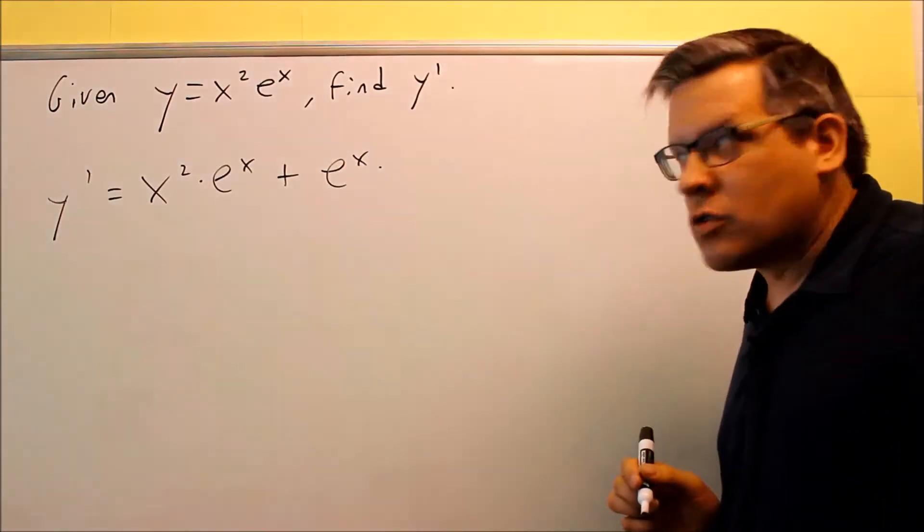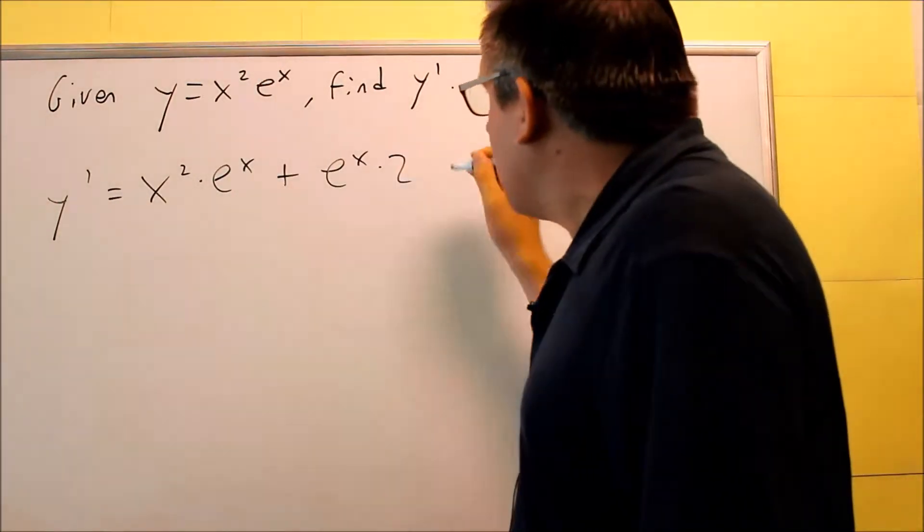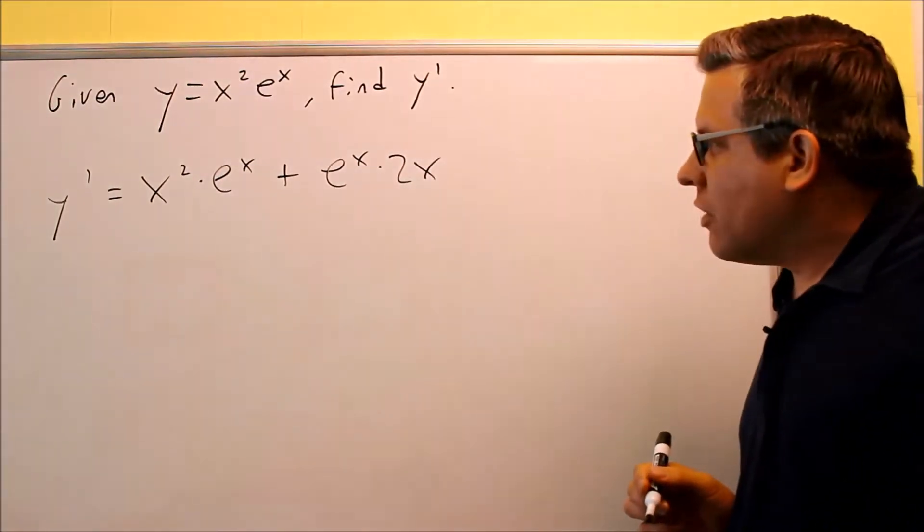times the derivative of the first. Two comes down, subtract one from the exponent, and you get this.